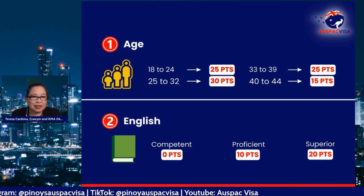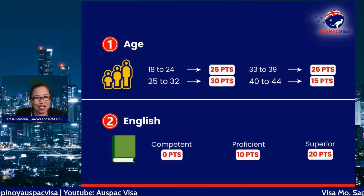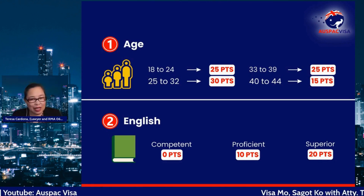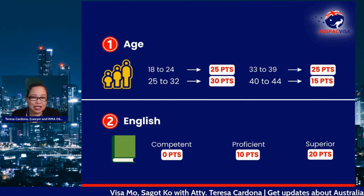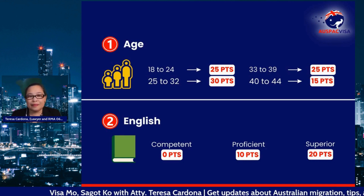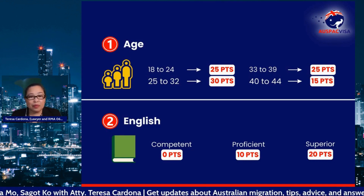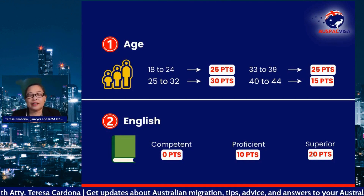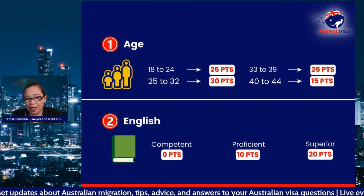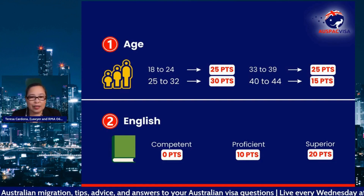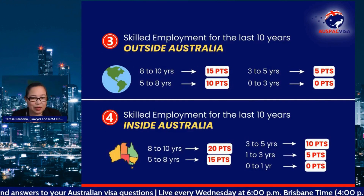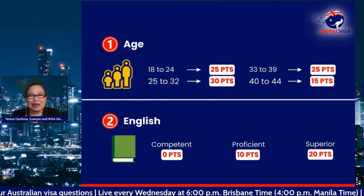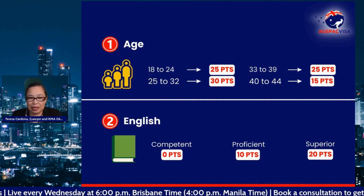If you have a score below proficient English, we cannot proceed to skills assessment. Proficient English — meaning 7.0 IELTS — gives you 10 points. Superior English — meaning 8.0 IELTS — gives you 20 points. So: competent is 6.0, proficient is 7.0, and superior is 8.0 on IELTS.